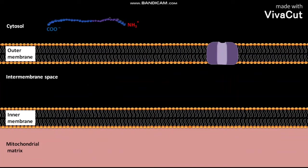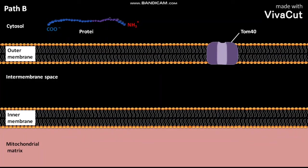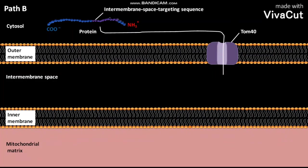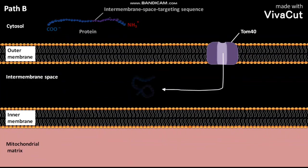Now let us discuss Path B. The outer membrane of mitochondria has the general import pore TOM40. In this pathway, a protein having only an intermembrane space targeting sequence is directly delivered into the intermembrane space through TOM40.